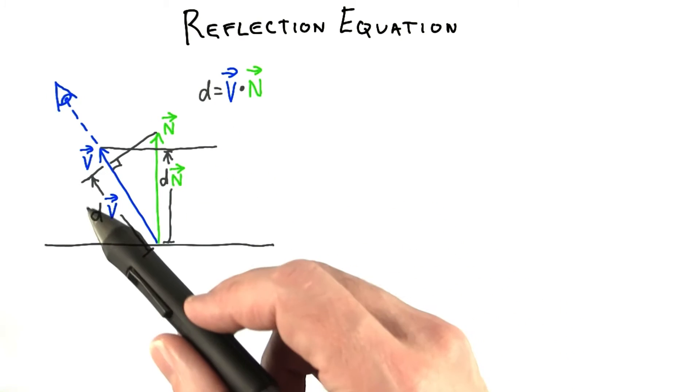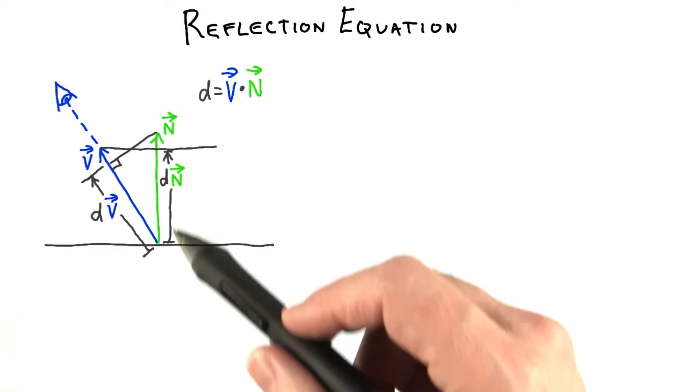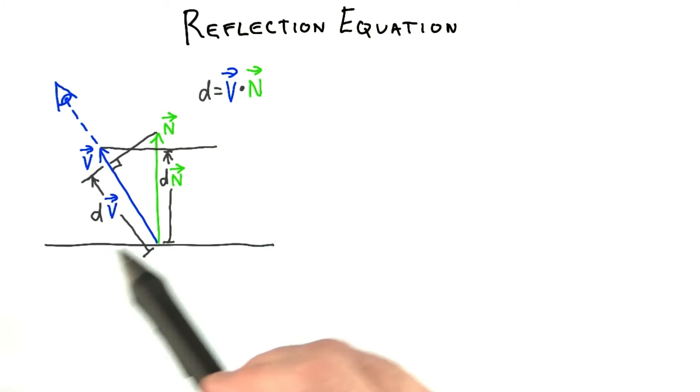You're now given two other vectors: dv, which is the v vector multiplied by this dot product, and dn, the normal multiplied by this dot product. You can see how these two vectors are produced here.